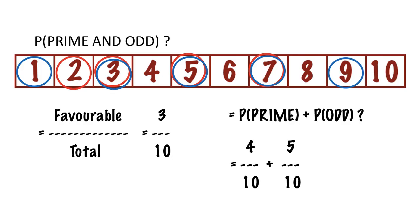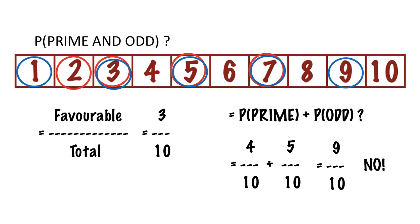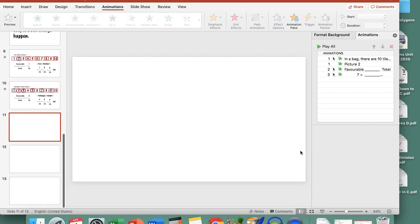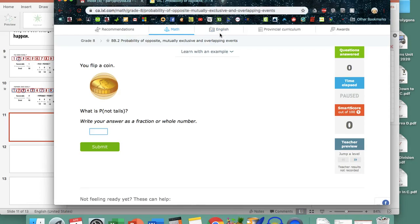You can't just say there are four prime numbers and five odd numbers, so together that's nine out of ten — no, that's not correct. Now let's apply this to some actual examples using iExcel. This is from grade 8, BB2.